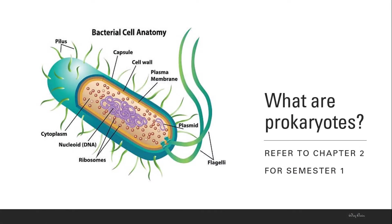Both domain Archaea and domain Bacteria include the prokaryotic cells or prokaryotes. There are a few unique characteristics that can be found in prokaryotes. Their cell covering includes the capsule, the cell wall, and the plasma membrane. There are also a few structures found at the surface such as the pili and the flagellum.